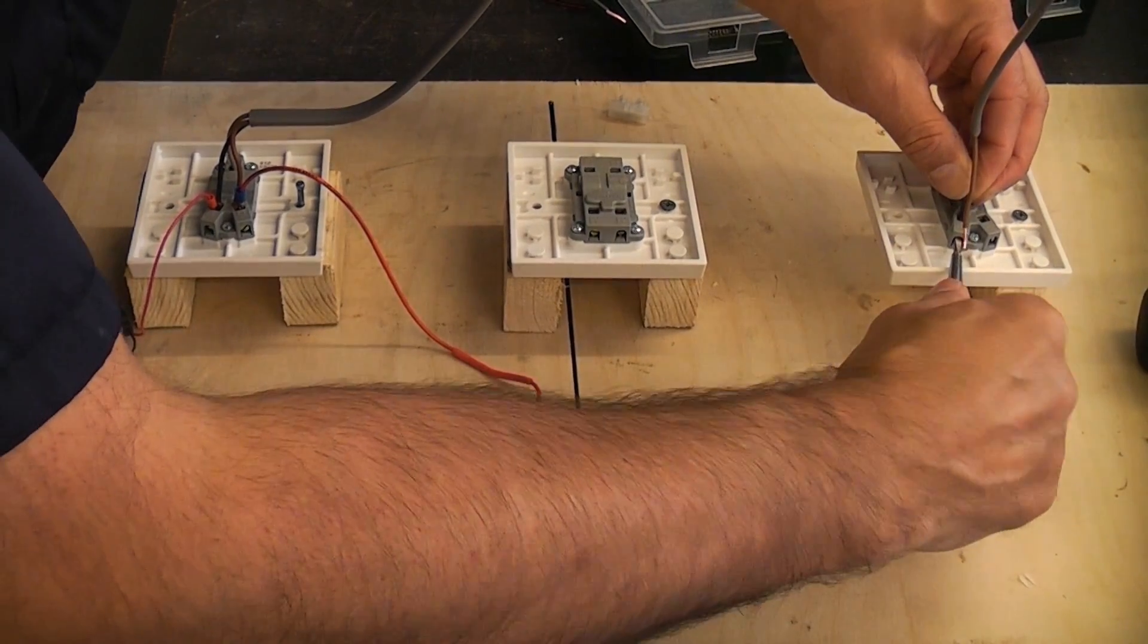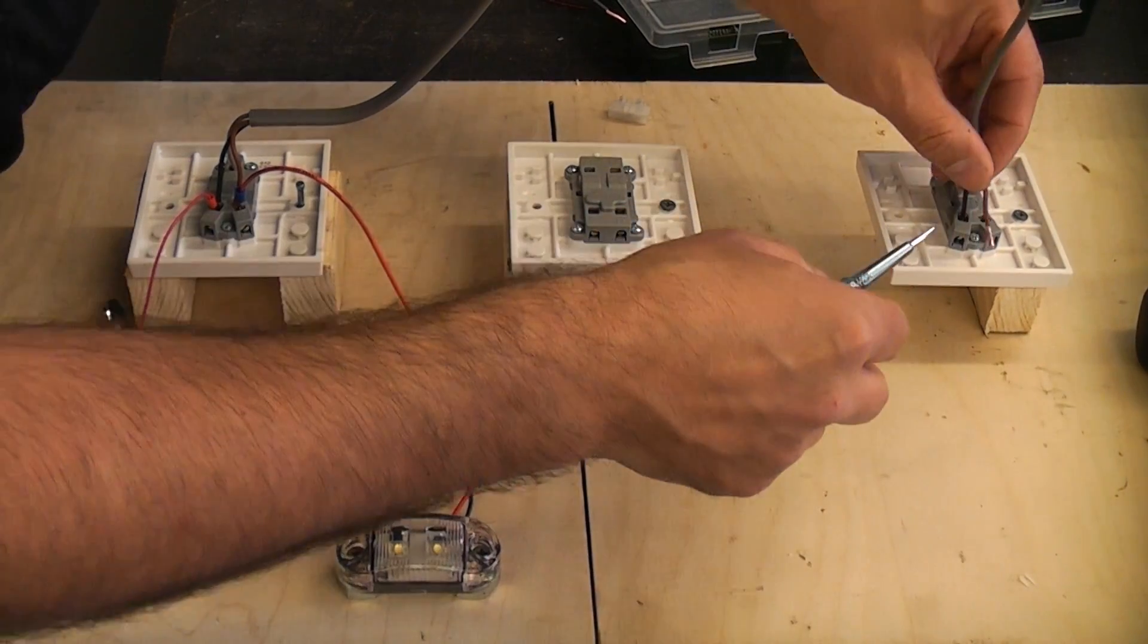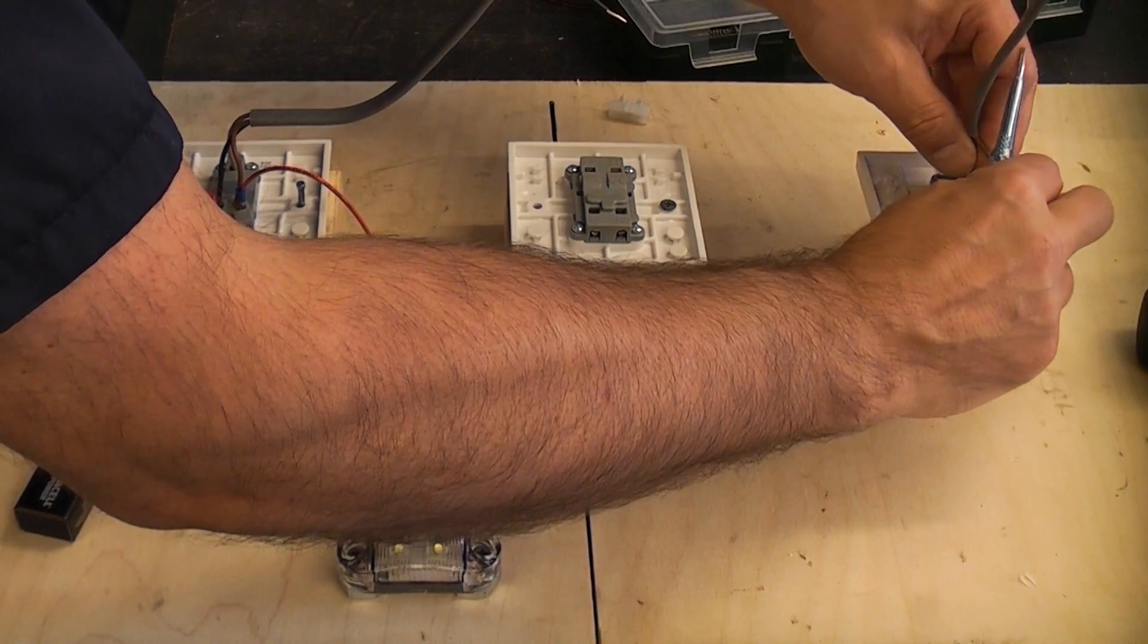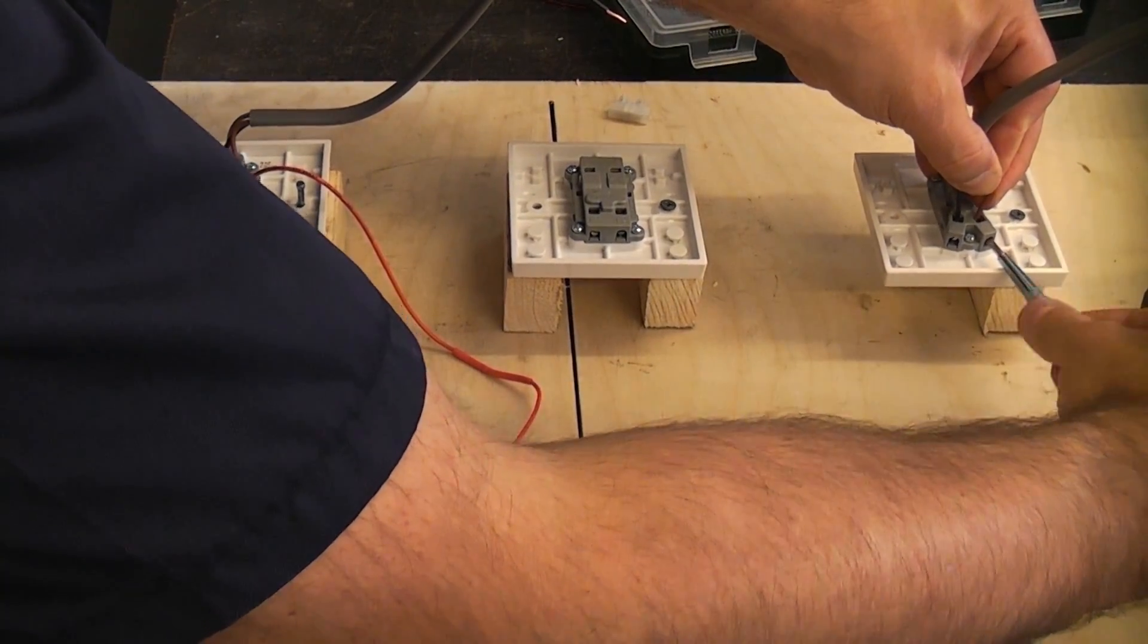Obviously if you're doing this on a lighting circuit in a house you do need to sleeve all of the wires with the relevant sleeving to identify them as being live at some point. I'm going to put the brown in L1.